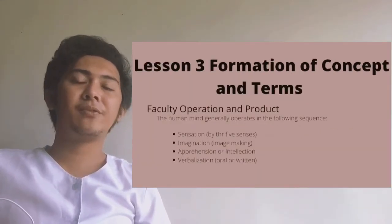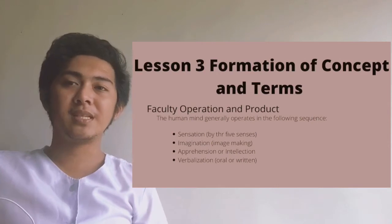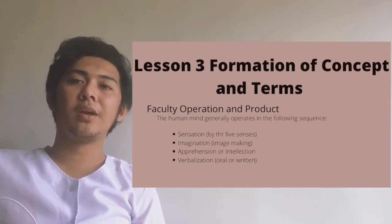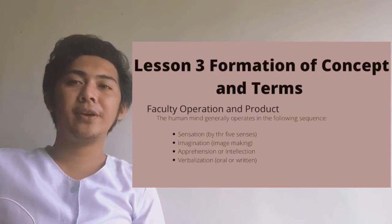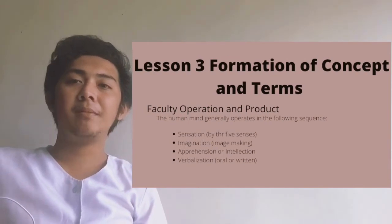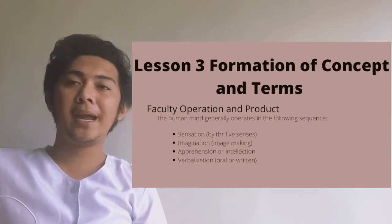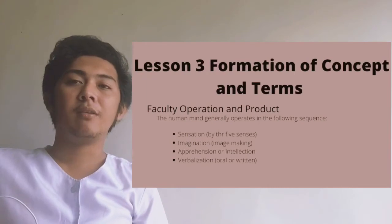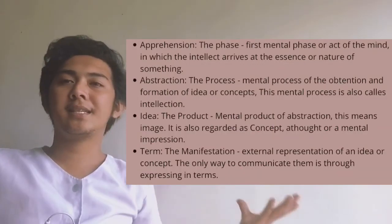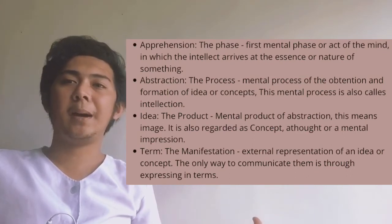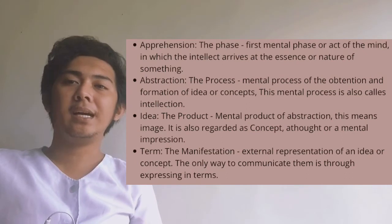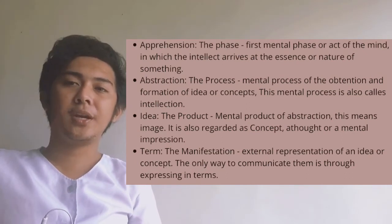Let's come now to Lesson 3: the formation of concepts and terms — faculty, operation, and product. The human mind generally operates in the following sequence: first, sensation by the five senses; imagination or image-making; apprehension or intellection; and verbalization, oral or written. The lesson also covers the phases of apprehension: abstraction, the idea or product, and the term or manifestation.